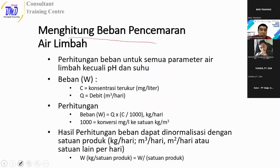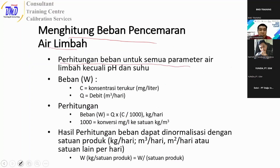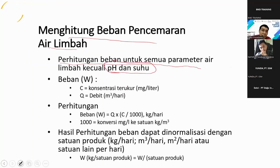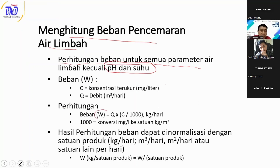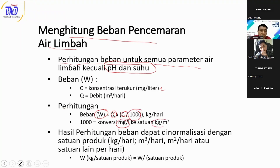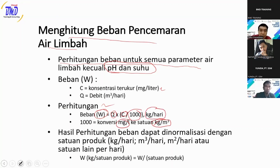Ini contoh dari cara menghitung beban pencemaran air limbah. Beban pencemaran air limbah ini wajib dilakukan perhitungan untuk semua parameter baku mutu, kecuali pH dan suhu, karena pH dan suhu tidak bisa dihitung beban pencemarannya. Untuk rumus perhitungannya: beban (W) sama dengan debit (Q) dikalikan konsentrasi (C) — misalnya COD dalam miligram per liter — dibagi seribu. Seribu ini adalah faktor konversi dari miligram ke kilogram per meter kubik, sehingga beban ketemunya kilogram per hari. Umumnya ini sudah dicantumkan di lembar hasil uji atau sertifikat hasil analisa laboratorium.